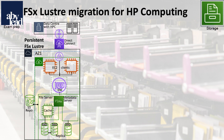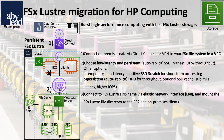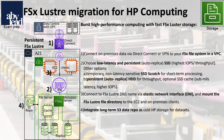In the following example, you connect your on-premises Linux high-performance computing files via Direct Connect to FSx Lustre. You choose the low-latency SSD option for highest IOPS with auto-replication for availability. Clients are then routed through ENI and mounted to FSx Lustre, with an integrated long-term S3 data repository as cold storage.